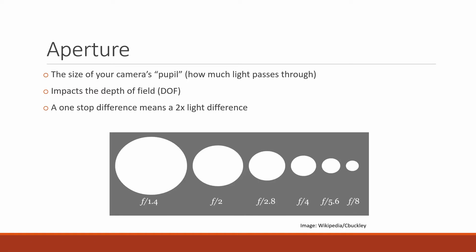Let's start with the aperture. The aperture is essentially the size of your camera's pupil — it controls how much light passes through. The aperture also impacts the depth of field, meaning how much of your image can be in focus. A one-step difference means a two-fold difference in light. For example, going from f/1.4 to f/2 means you're losing light. f/1.4 is a wide aperture, while f/8 is a much smaller aperture that lets less light pass through.